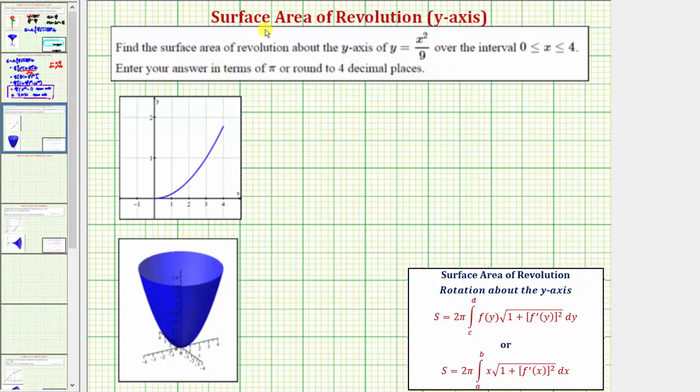We want to find the surface area of revolution about the y-axis of y equals x squared divided by nine, over the interval where x is greater than or equal to zero and less than or equal to four. The graph of the function over the given interval is shown here.